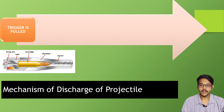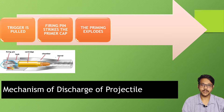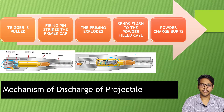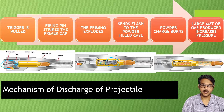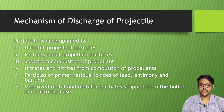Coming to the mechanism of discharge of a projectile: whenever the trigger is pulled — whether in a shotgun or a firearm — the firing pin, by mechanism of a spring, strikes the primer present in the base of the cartridge. When the firing pin strikes the primer cup, the priming mixture inside it explodes, releasing a flash that ignites the gunpowder in the cartridge. The propellant burns and creates a large amount of gas, which expands the cartridge case and releases the projectile out of the barrel. In a rifle it may be a single projectile; in a shotgun, multiple pellets may be released.